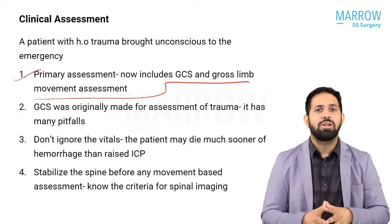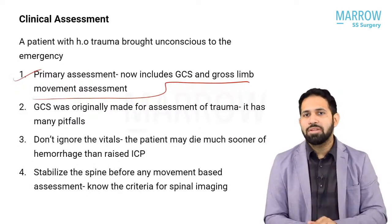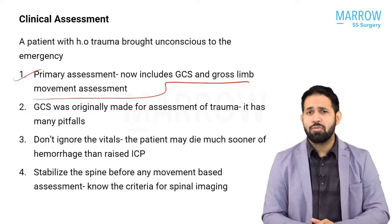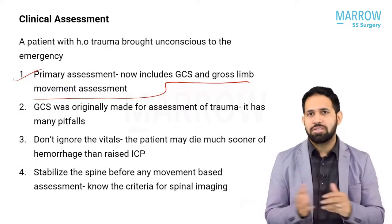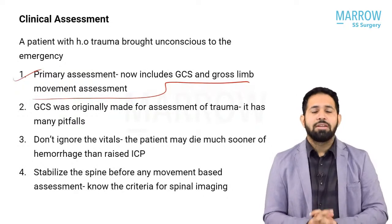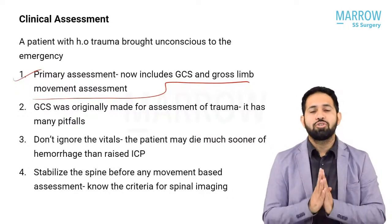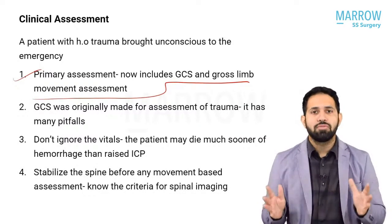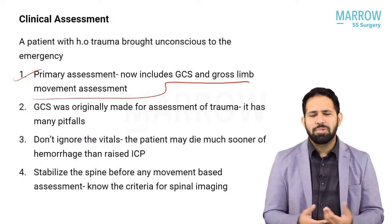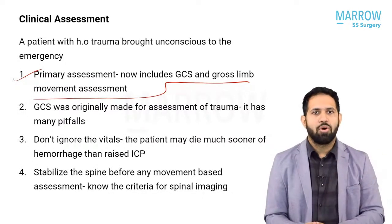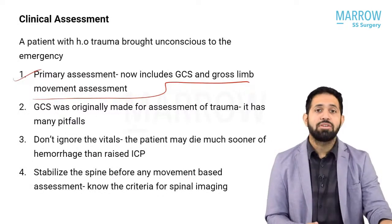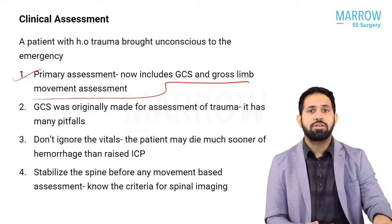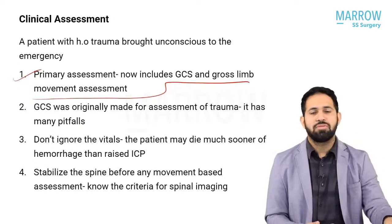GCS is a coma score and should be used in coma. Eye-opening: E1 no eye-opening, E2 to pain or stimulation, E3 to command, E4 spontaneous. Verbal: V1 no response, V2 incoherent sounds, V3 single words, V4 complete sentences but disoriented to time, place and person, V5 complete oriented response. It is the M response that causes the most confusion.